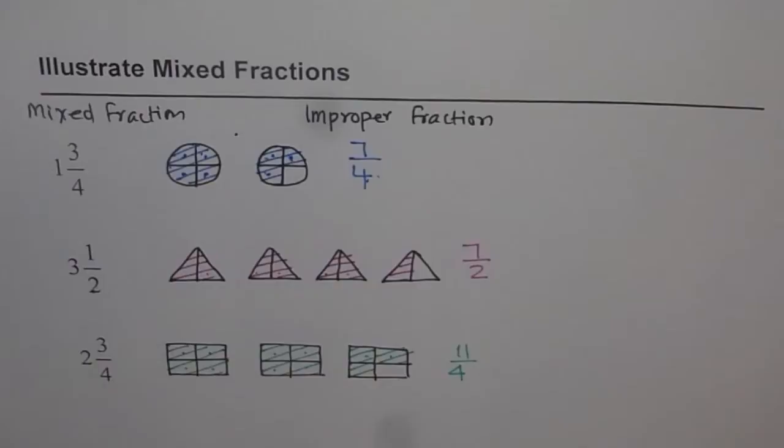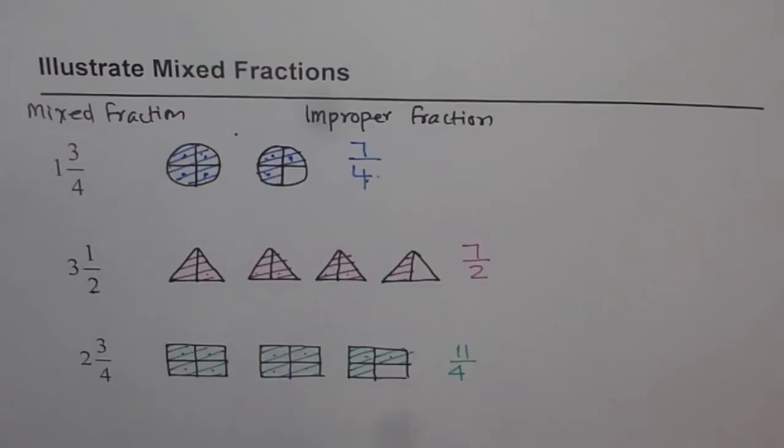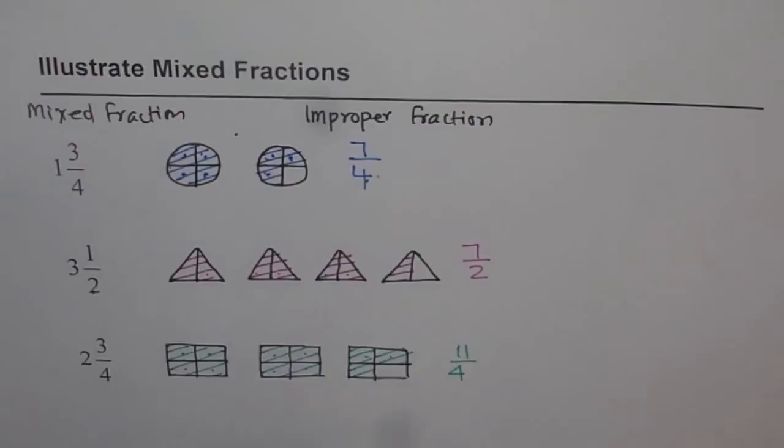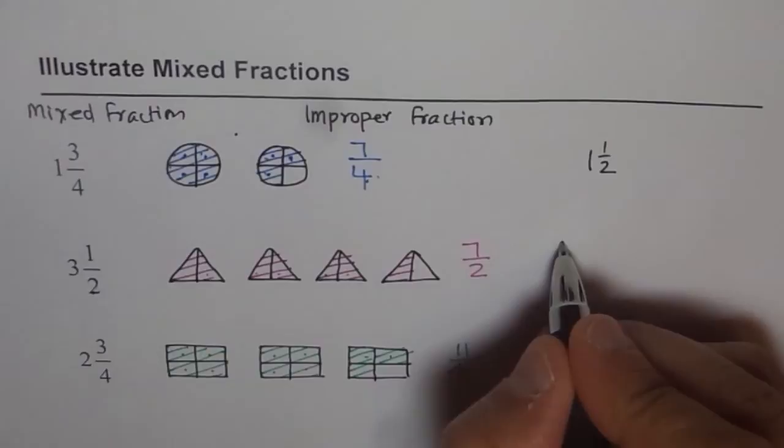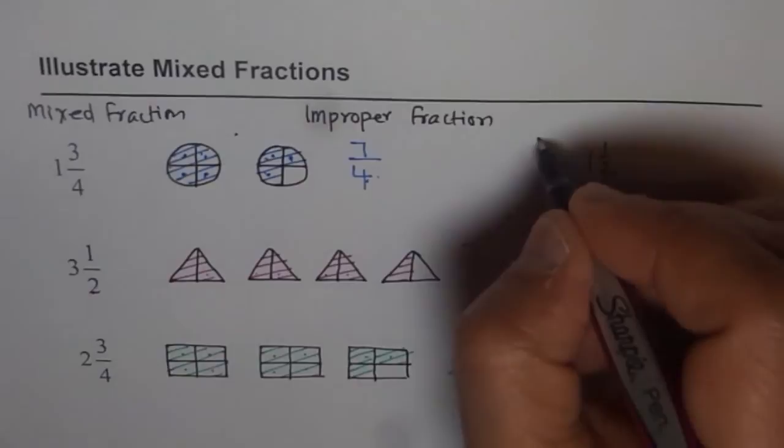Now, for you as an exercise, let me give you some questions. I'm giving you mixed fractions. You need to illustrate them and write them as improper fractions. So instead of 1 3/4, try to do 1 1/2. And instead of 3 1/2, try to do 2 3/4. And then, instead of 2 3/4, let's take up an example as 3 1/5. Let that be your practice exercise.